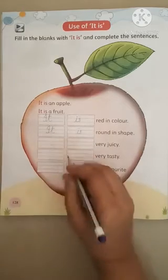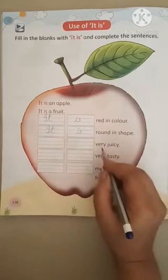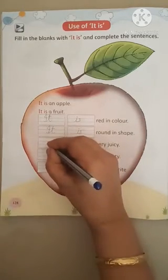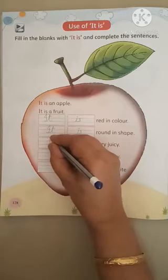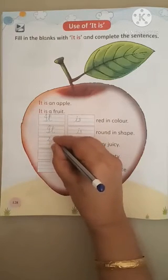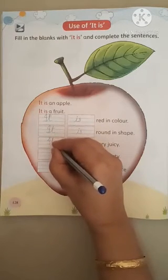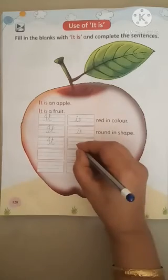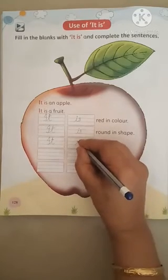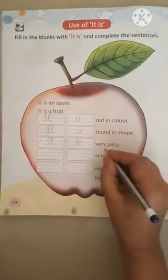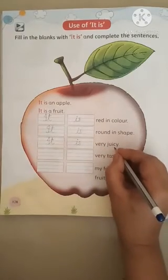Next, blank — very juicy. I, T — 'it'. I, S — 'is'. It is very juicy.